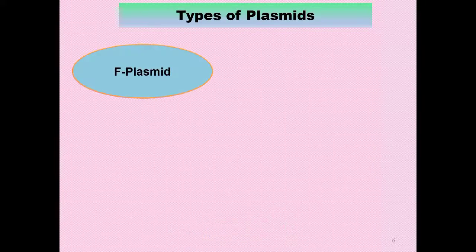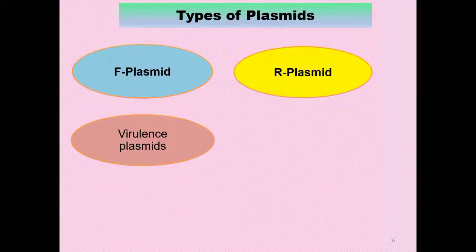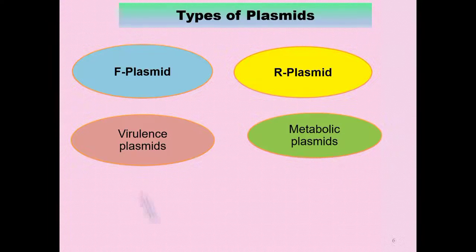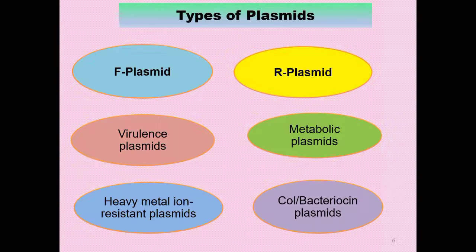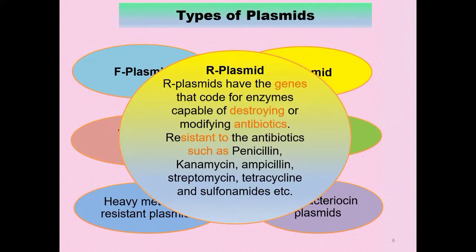Types of plasmids: plasmids have been classified into various types — F-plasmids, R-plasmids, virulence plasmids, metabolic plasmids, heavy-metal resistant plasmids, and colicin or bacteriocin plasmids. Among all these, R-plasmids, called resistant plasmids, have certain genes that code for enzymes capable of destroying or modifying antibiotics.